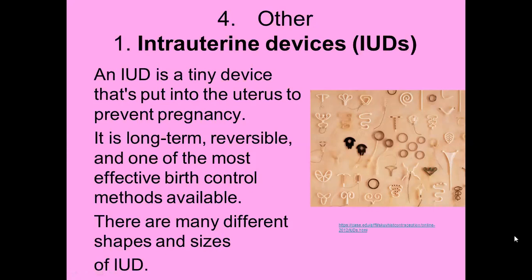Now we're moving on to another group of methods — intrauterine devices, often referred to as IUDs. Intra means within. An IUD is a tiny device put into the uterus to prevent pregnancy. It is used long-term but is reversible, and is one of the most effective birth control methods available. There are many different sizes and shapes of IUDs — the pictures show you many of the different kinds.